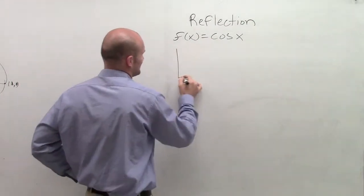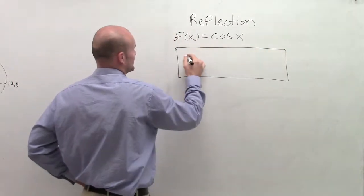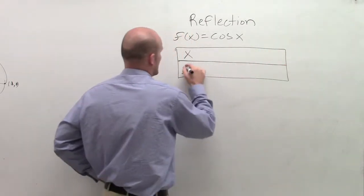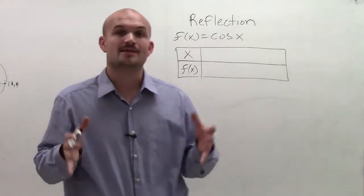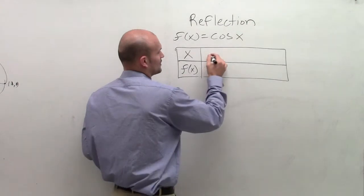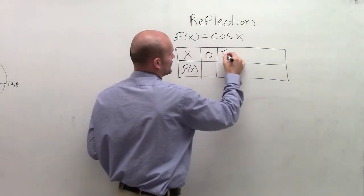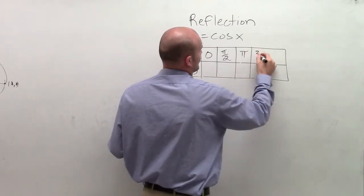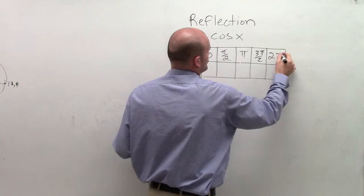Let's draw a little table. To start with the graph, let's set up our x and f(x) columns. I'm going to work with the first period in the positive direction of the cosine function. The points I'll use are: 0, pi over 2, pi, 3 pi over 2, and 2 pi.